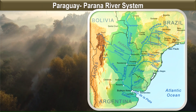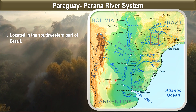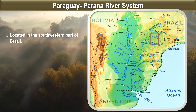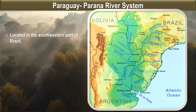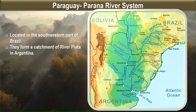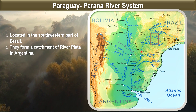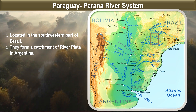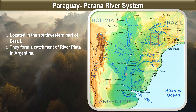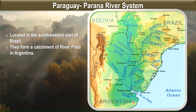We now move on to the Paraguay-Paraná River system, located in the southwestern part of Brazil. The neighboring countries here are Bolivia, Paraguay, and Argentina. The Paraná River flows from the southwest direction and joins the Paraguay River, which moves directly south. They both join at a junction and then join the Uruguay River, forming the River Plata catchment in Argentina.